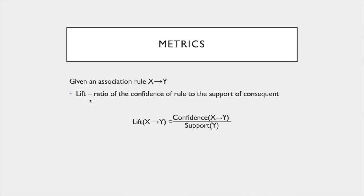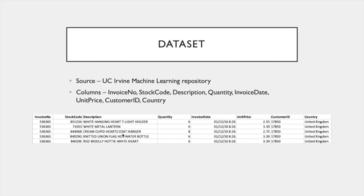The last metric is lift. Lift uses both confidence and support to produce a new metric. For a given association rule X implies Y, lift is calculated as the confidence of the association rule divided by the support of the consequent Y.